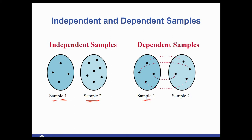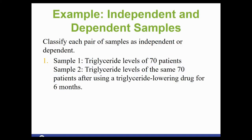When it is dependent, they will have the same sample size between the two groups because they are the same people. So each dot would exactly line up to somebody in the second sample. So here's an example. Sample one is the triglyceride levels of 70 patients. Sample two is the triglyceride levels of the same 70 patients after using a triglyceride lowering drug for six months. The key word here is that they are the same people. So this would be dependent.